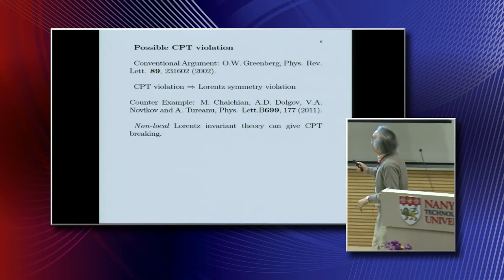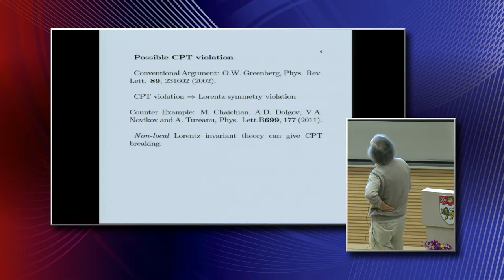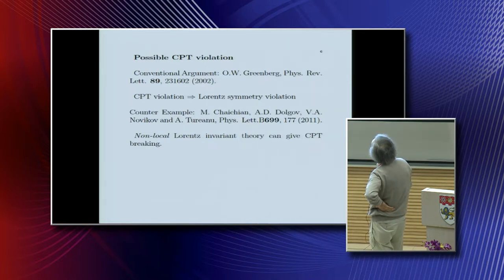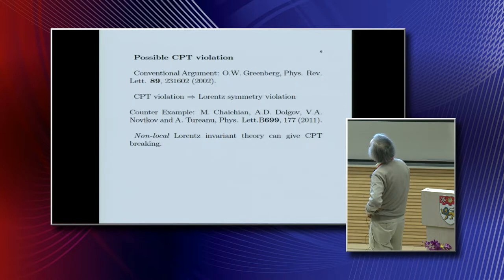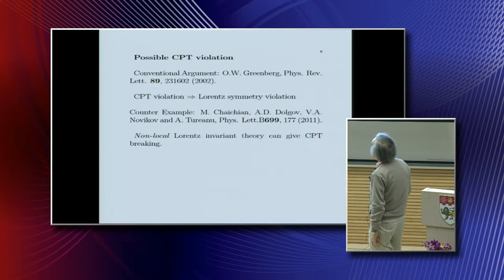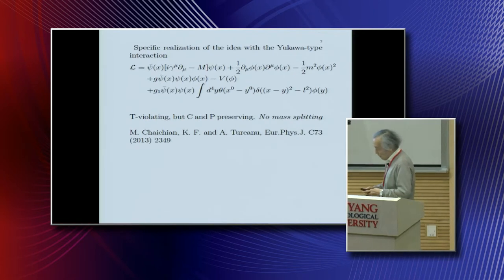A possible CPT violation: the conventional argument, perhaps from the Greenberg paper, is that CPT violation inevitably violates Lorentz symmetry. But this argument applies to CPT-valid theories that are well-defined axiomatically; after breaking, it is not specified, and therefore there are loopholes. There are counterexamples, such as that non-local Lorentz invariant theory can give CPT breaking. Of course, if we break CPT in a non-local way, unitarity has some problems, but at least we can break it. This theorem says it's not allowed locally, but actually you can break CPT in a non-local way.